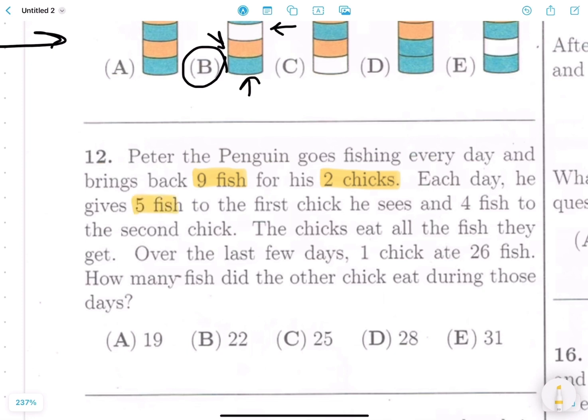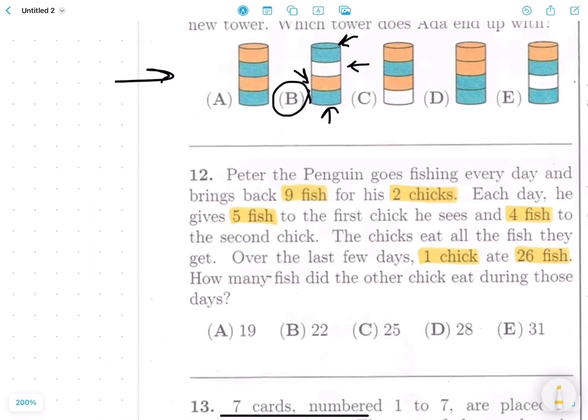He brings back nine fish for his two chicks. Each day he gives five fish to one, whichever one is the first one he sees. And then the other one gets four fish, because nine minus five is four. One chick, over the last few days, ate 26 fish. So let's just think about that. How are we going to figure out how many days have gone by to figure out how many fish the other chick ate? Well, another way of saying this problem is just how many groups of five and four fit into 26.